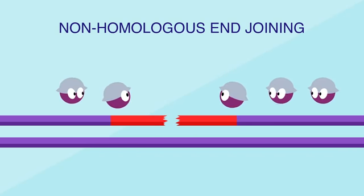UV light can cause damage that's a little harder to fix. Sometimes it causes two adjacent nucleotides to stick together, distorting the DNA's double helix shape. Damage like this requires a more complex process called nucleotide excision repair. A team of proteins removes a long strand of 24 or so nucleotides and replaces them with fresh ones.